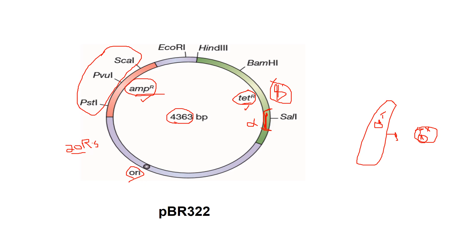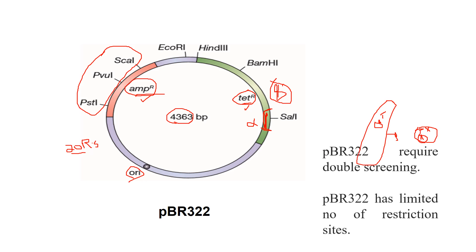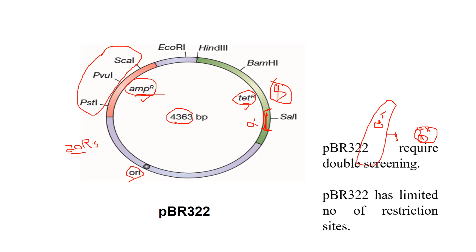We will select transformants or recombinants and screen our plasmid using these antibiotic resistance genes as selectable markers. pBR322 requires double screening — the first step screens whether the bacteria was transformed, and the second step screens whether the desired gene was successfully inserted.